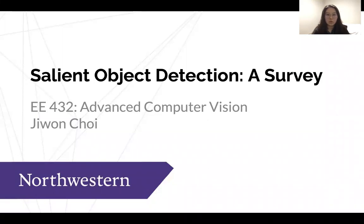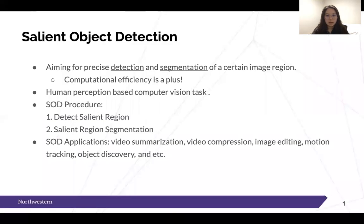Hello everyone, this is Jiwon and today I'm going to talk about salient object detection and its various methods along with each major task. Salient object detection is trying to precisely detect and segment a certain image region. This method is based on how humans perceive and detect an important object from a scene.